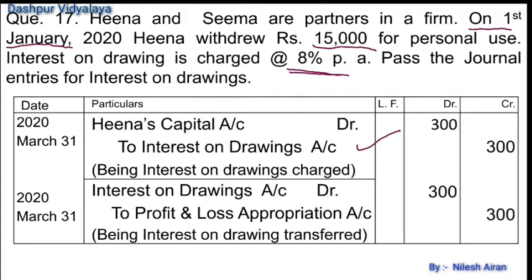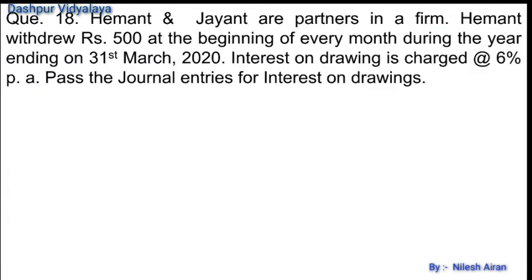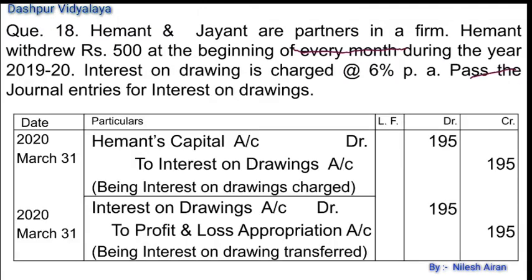Journal entries: Hina's capital account debit to interest on drawings account; interest on drawings account debit to profit and loss appropriation account. Next question: Hemant and Jayant are partners. Hemant withdrew rupees 500 at the beginning of every month during the year ending 31st March 2020. Interest on drawings is charged at 6% per annum. Journal entries: Hemant's capital account debit to interest on drawings; interest on drawings account debit to profit and loss appropriation account.